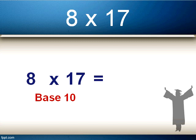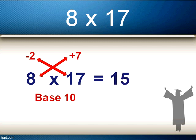8 this time is 2 less than our base number — see the difference creeping in — so it's minus 2. And 17 is 7 more than our base number 10, so plus 7. The first step to getting our answer is to add the minus 2 to the 17, which gives us 15, or the 7 to the 8, which is also 15. Again it doesn't matter which you choose — the answer is exactly the same: 15. Remember, don't think of it as 15; it's actually 150 as we're using base 10.